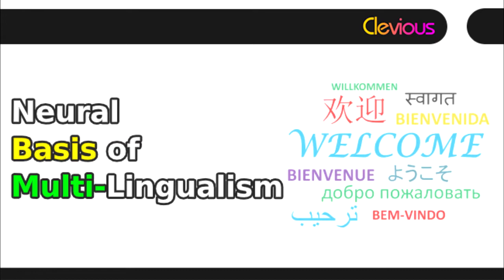A multitude of studies have been carried out to assess the neural organization within polyglots through neuroimaging techniques while subjects were administered different tasks. A few tasks and their subsequent neural activation shall be discussed later in this chapter. For an in-depth analysis of single language localization within the brain, please refer to previous chapters within this online textbook.